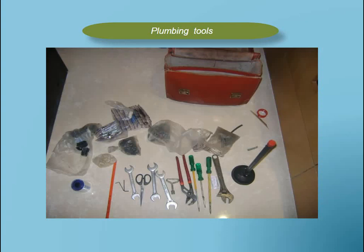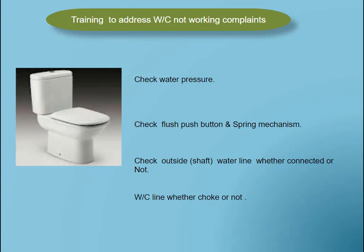Plumbing tools: you can see the required plumbing tools for the CanFixit kit. Training to address the WC not working complaint: check the water pressure, check the flush push button spring mechanism, check the outside shaft water line — whether connected or not, and whether the WC line is choked. Always start with the simple checks, then move to medium, then difficult.